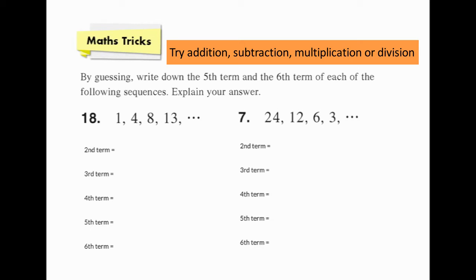Let's have a look at this example: 1, 4, 8, 13. We have to find the fifth term and the sixth term. Since the numbers are in ascending order, we should consider addition or multiplication. Let's try addition first.